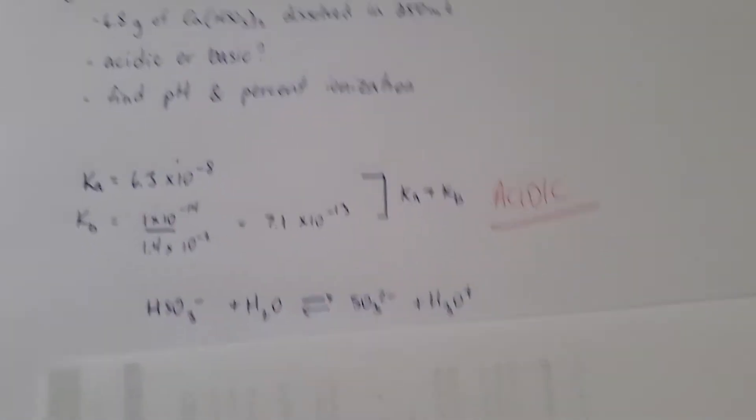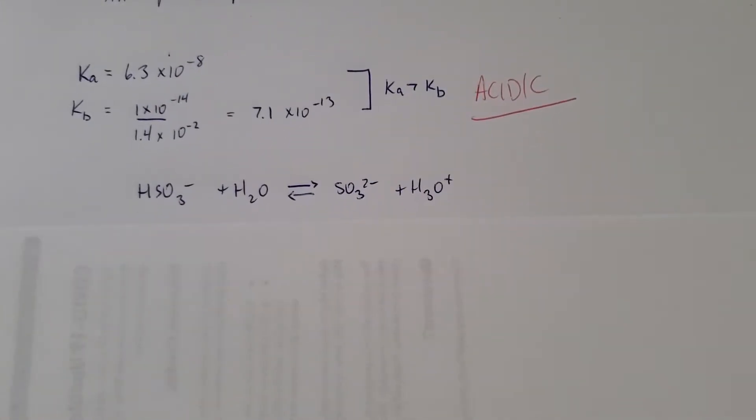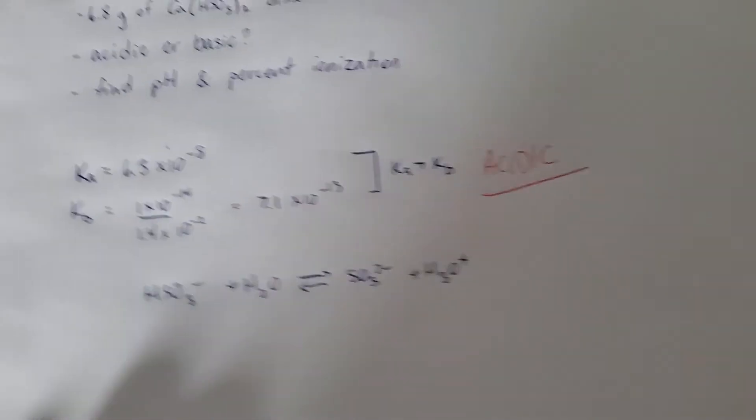All right, the question may ask what's the ionization formula. Hydrogen sulfite ionizing in water into sulfite and hydronium. So let's get to the good parts now, finding the pH.